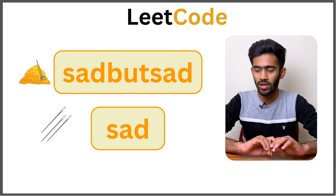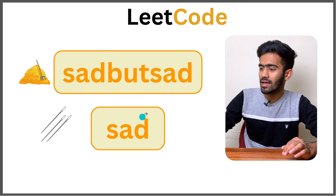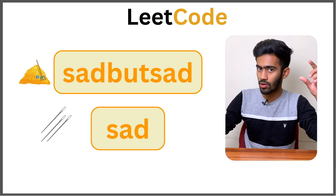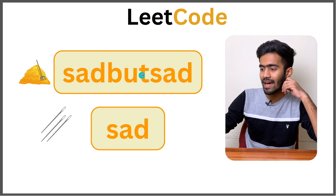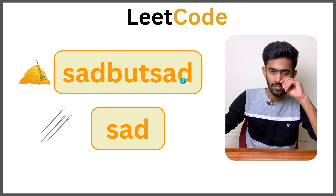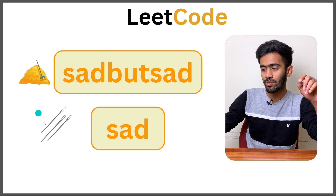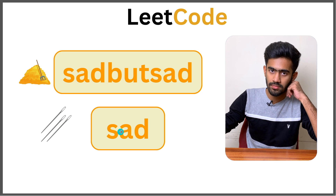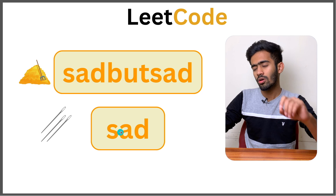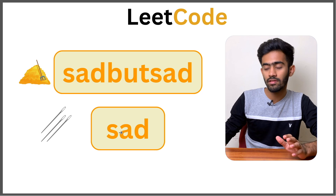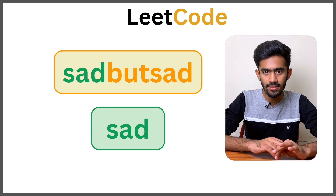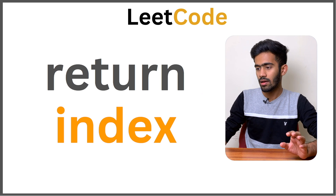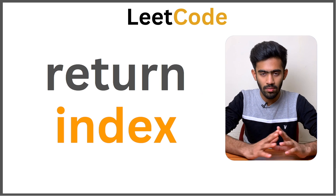Let's go to the first example. The original string, the haystack, is 'sadbutsad'. The needle, the substring, is 'sad'. When we search for 'sad', the first letter matches at the very beginning. So we return that index.